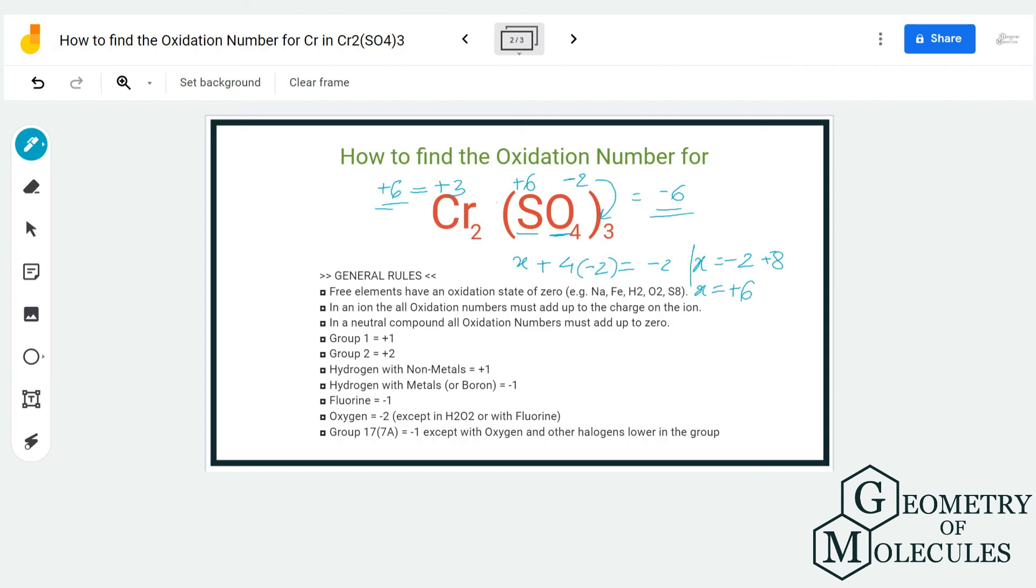The sulfur here has a +6 oxidation number, chromium has +3, and oxygen has -2. Following these general rules, you can find out the oxidation number of different atoms and ions.